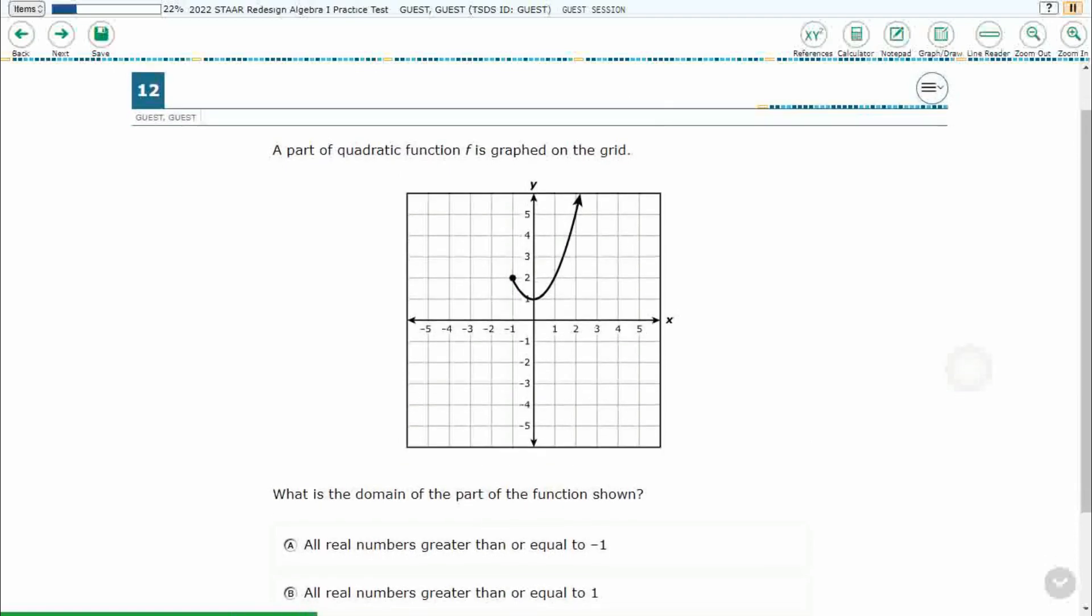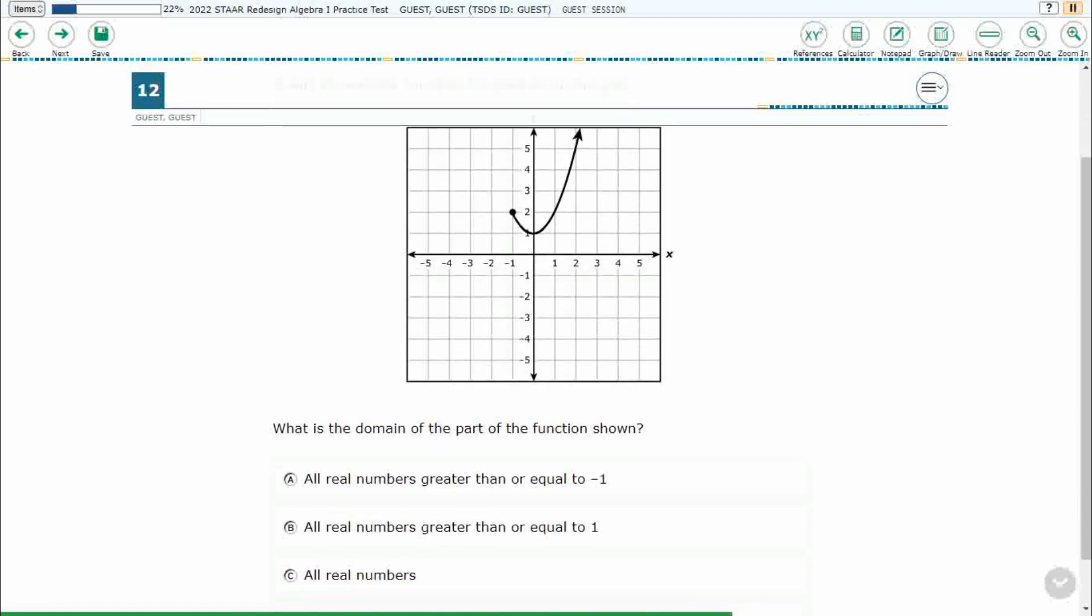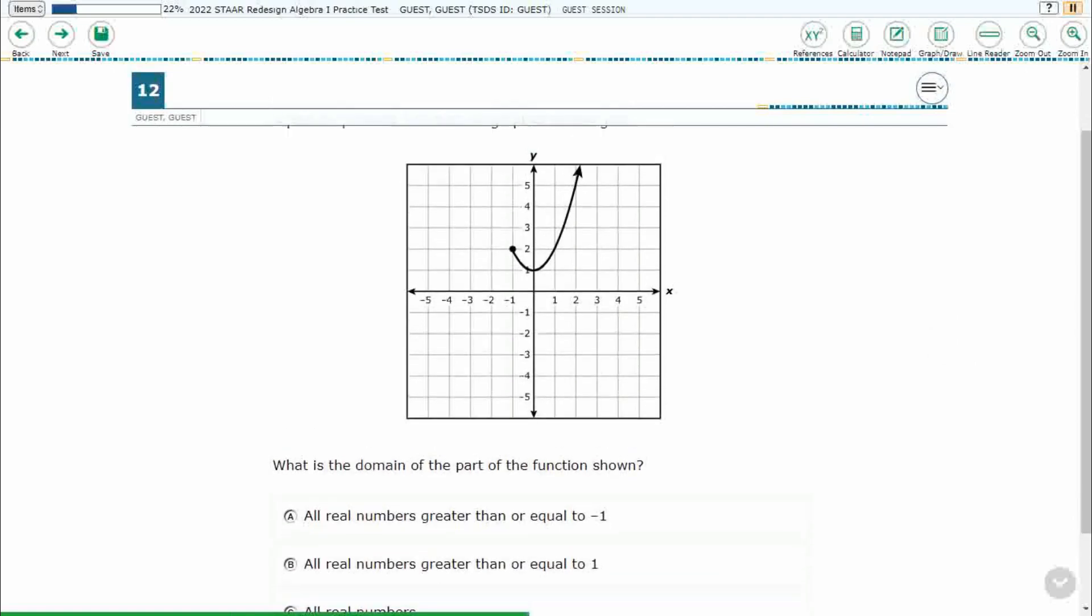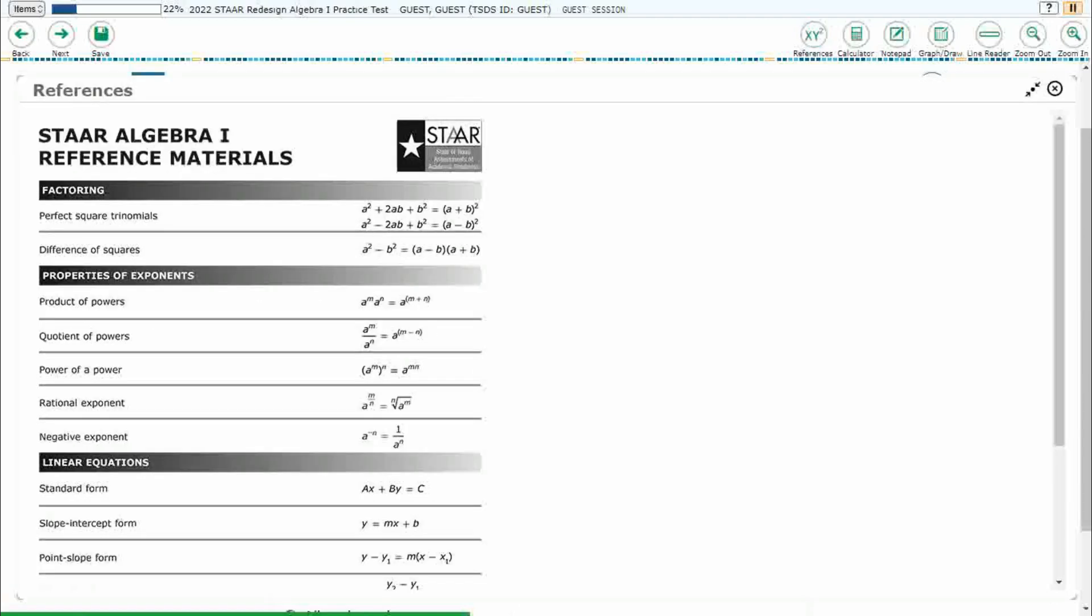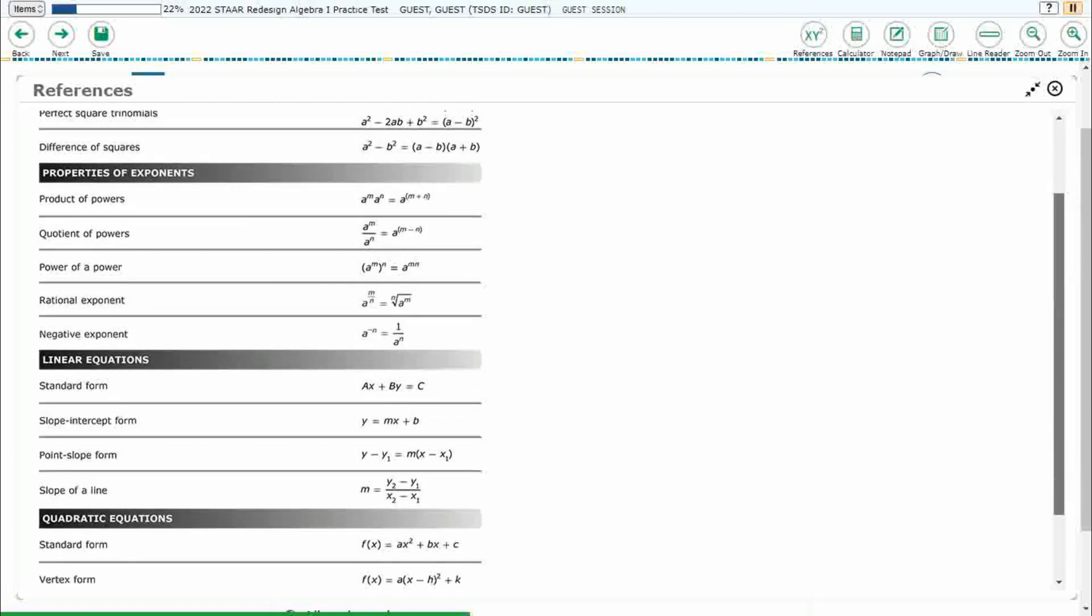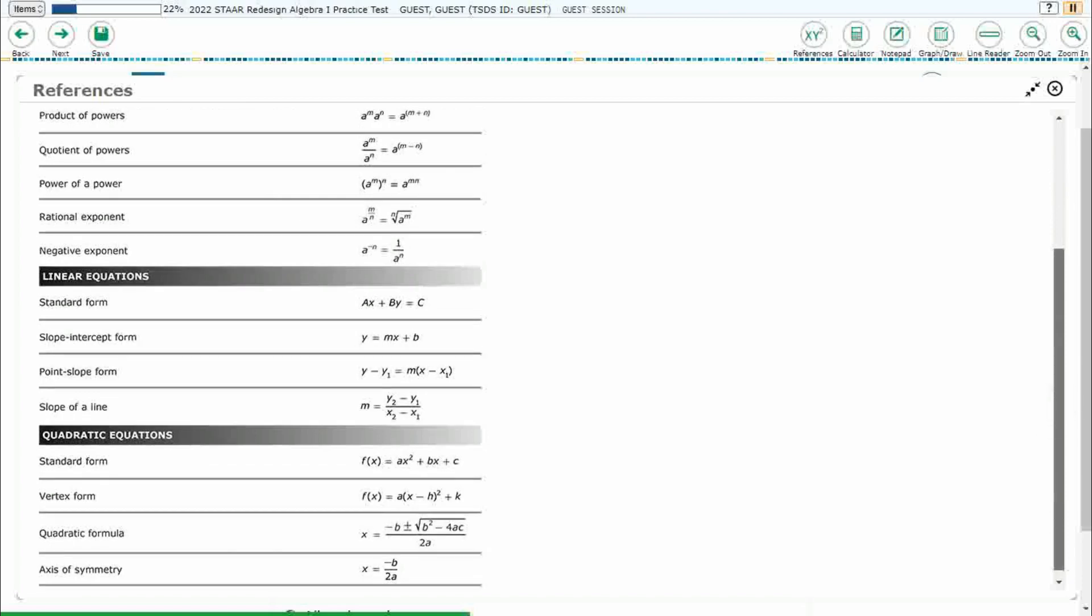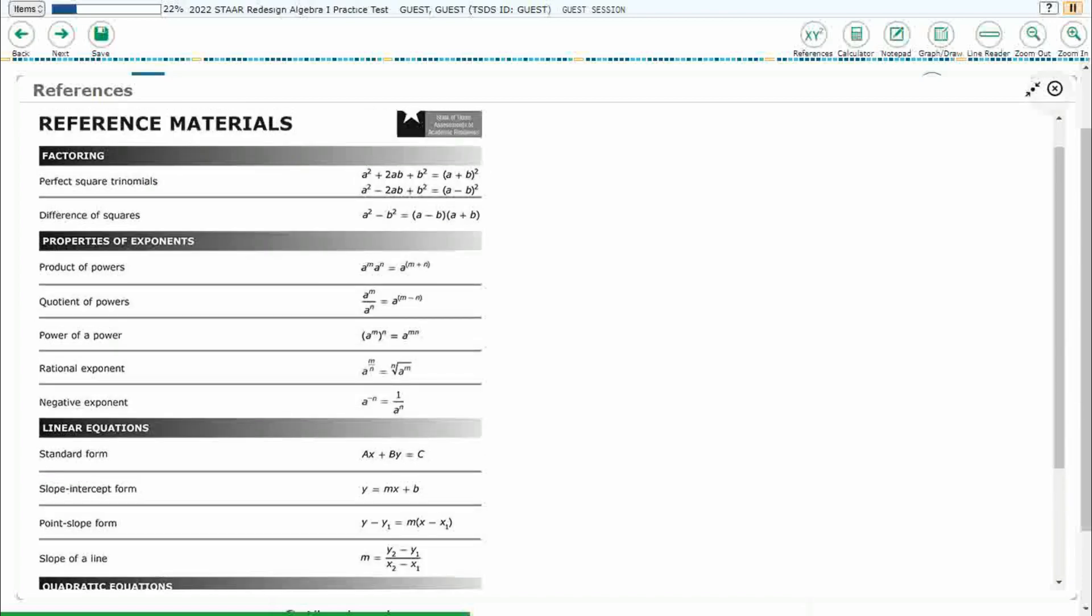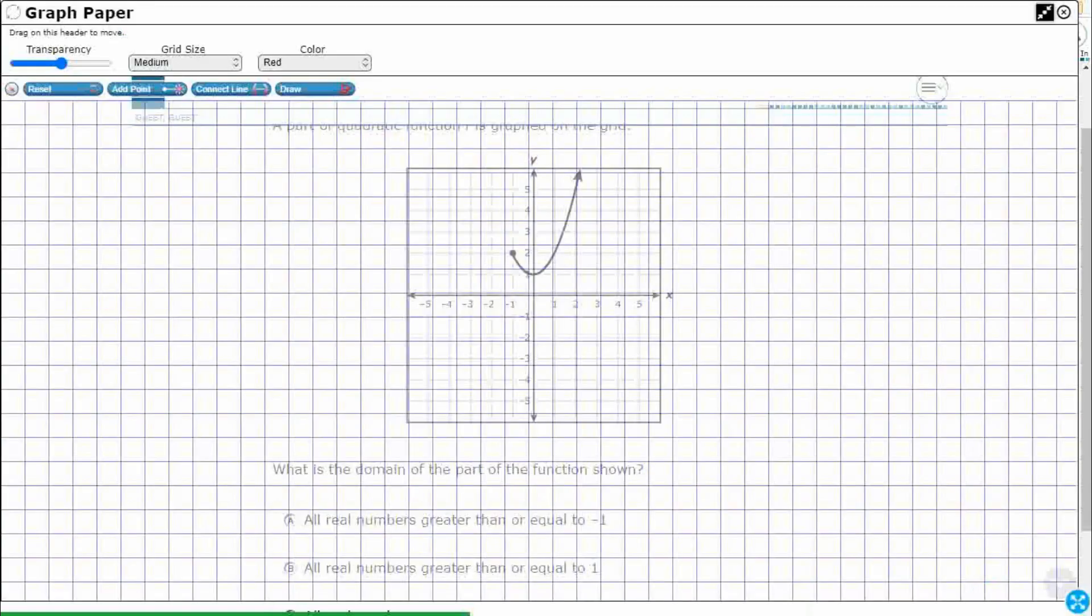So we have part of a quadratic function F that's graphed. We are looking for the domain and let's just verify that word domain is not going to be showing up anywhere here on our reference material. So we get a whole bunch of functions here and equations and formulas but we're not going to get domain showing up anywhere. So unfortunately we have to know what domain means before we even come into the start test.